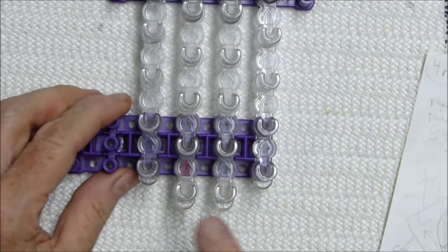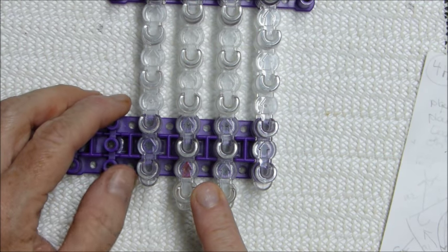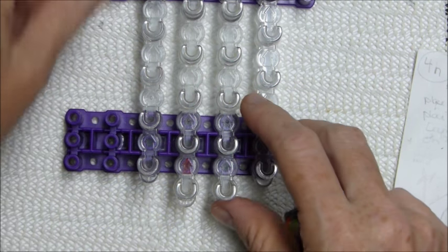This is your loom setup. It's four pins, or four bars. Two in the middle are one pin lower than the two on the outside.